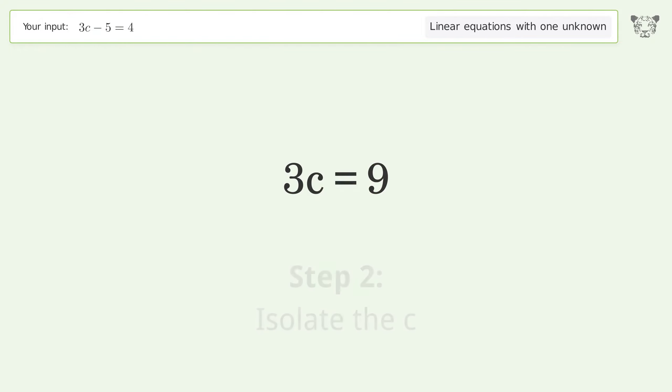Isolate the c. Divide both sides by 3. Simplify the fraction.